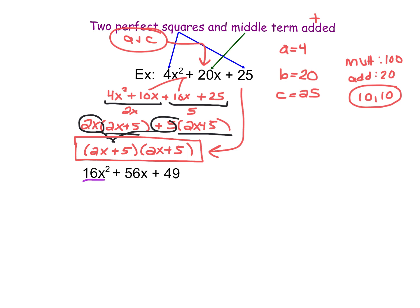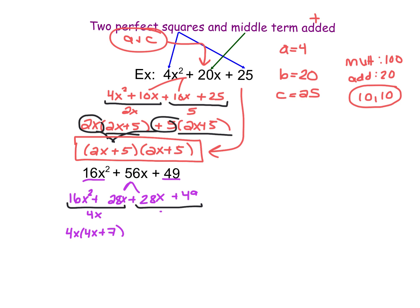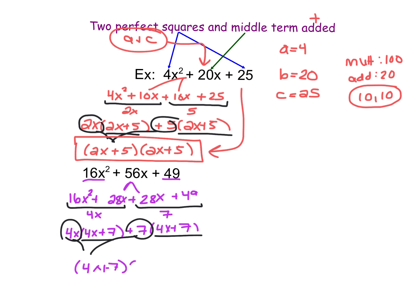In my second example, the A value is 16x² and the C value is 49. I know that 16 and 49 are both perfect squares, so I'm going to split 56 evenly. 56 divided by 2 gives 28x + 28x. Then I add 49 at the end and 16x² at the beginning. Breaking it into pairs and finding the greatest common factor: the GCF of the first set is 4x, giving 4x(4x + 7), and then the GCF of the second set is 7, giving 7(4x + 7). The parenthesis parts match, so I end up with (4x + 7)(4x + 7).